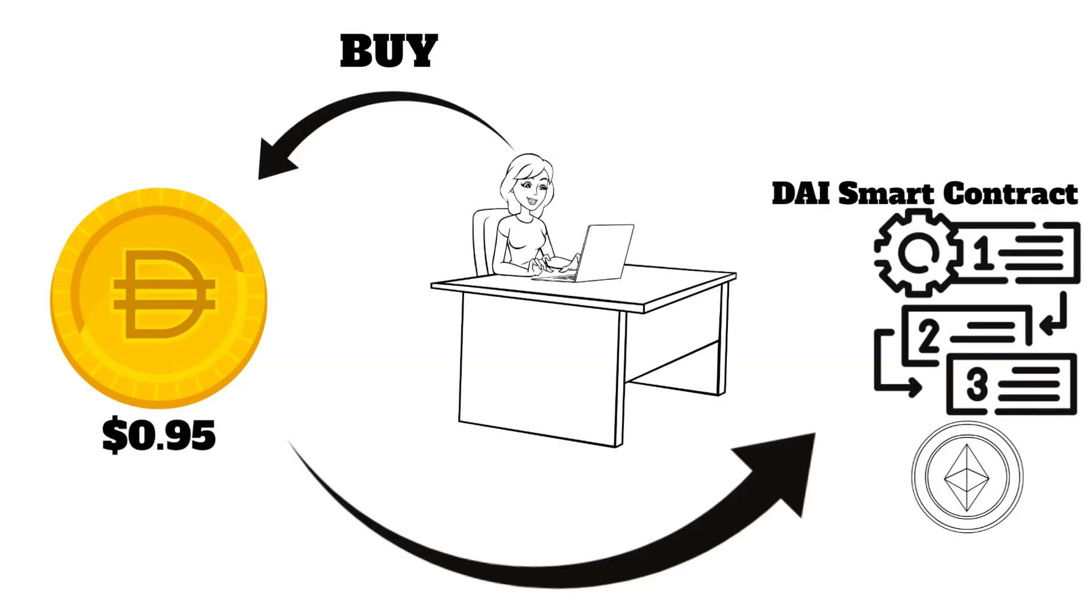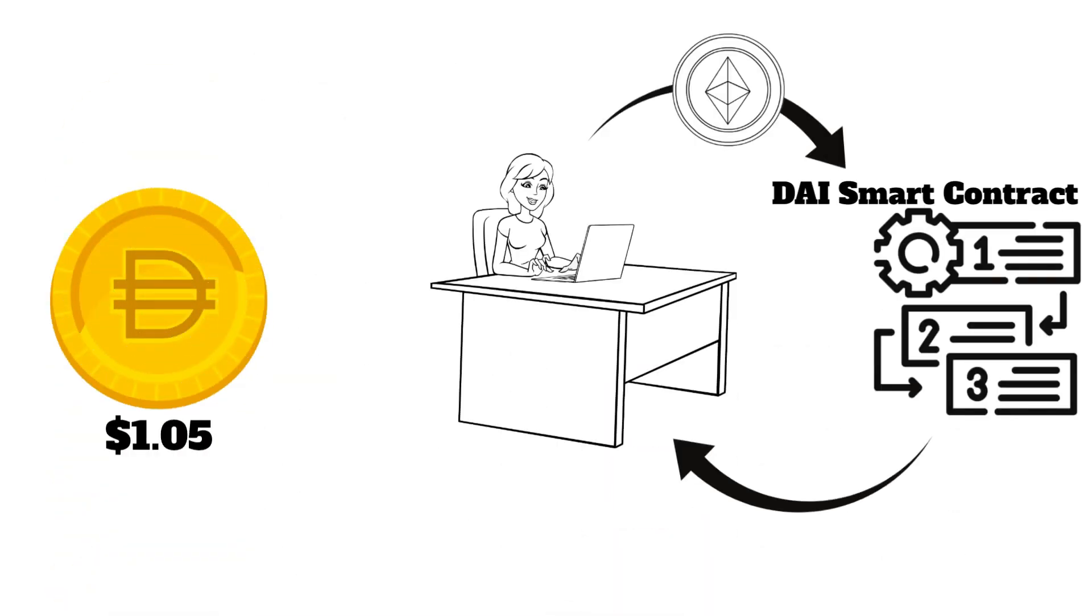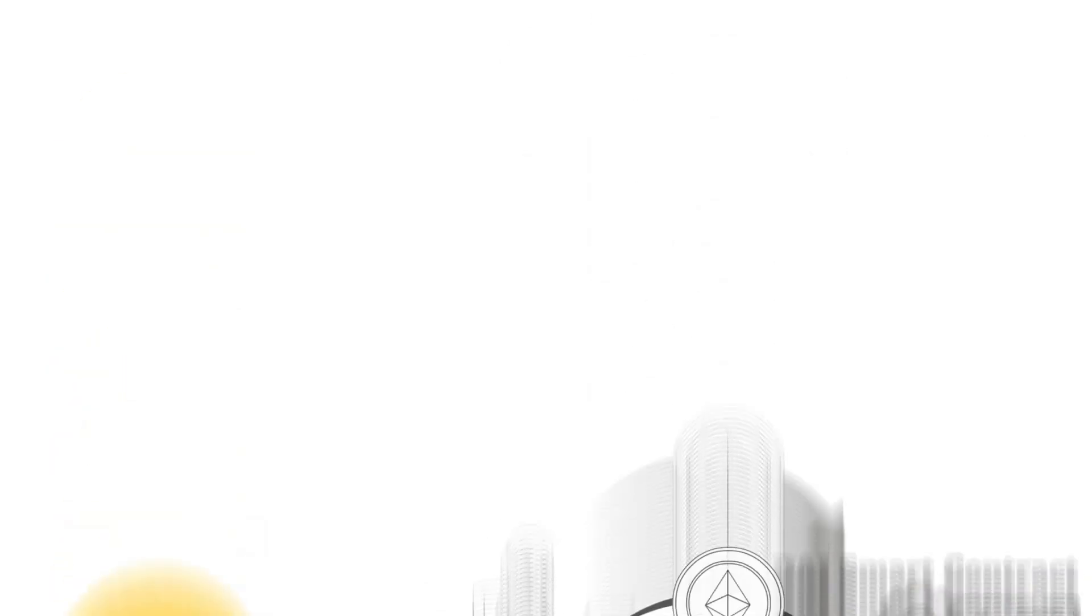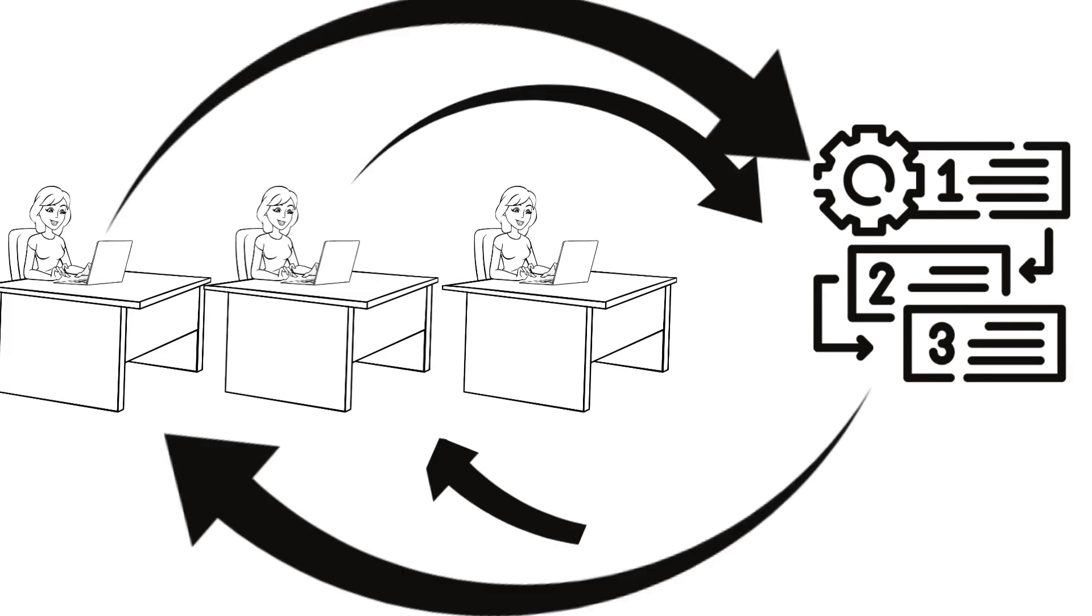The DAI stablecoin is kept at a value of 1 dollar through a system of economic incentives. If the value falls below 1 dollar, people can buy cheap DAI and get the collateral back at a discount. If the value goes above 1 dollar, people can generate more DAI and gain additional purchasing power. This system is maintained by thousands of people and aims to keep the price of DAI stable at 1 dollar.